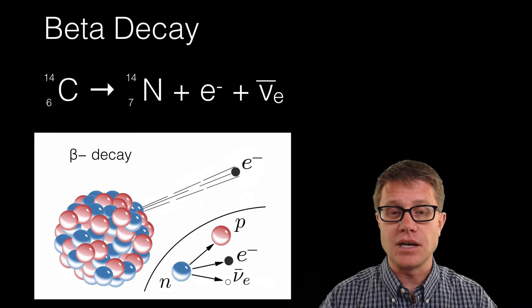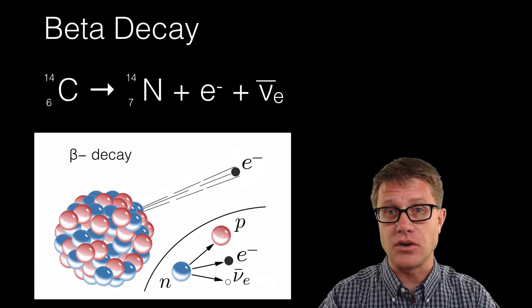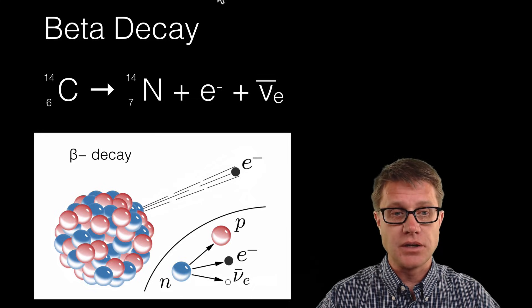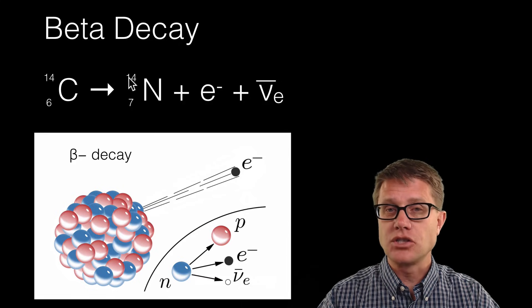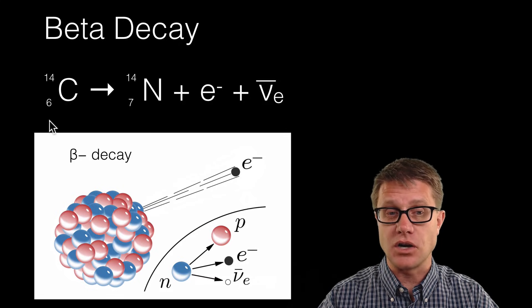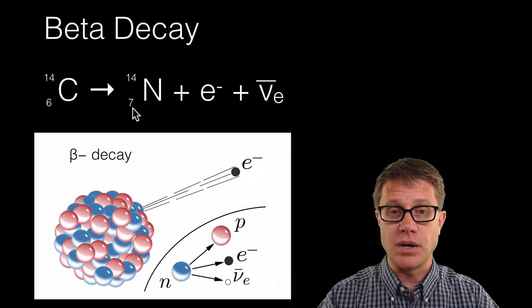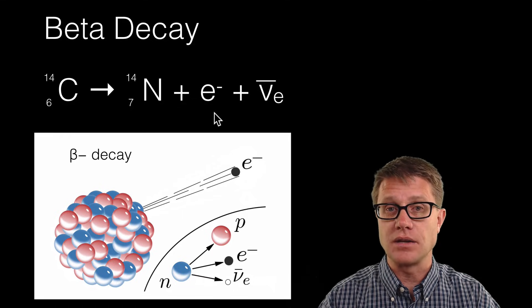Let's look at beta decay. In beta decay we convert a neutron to a proton. We also give off an electron and an electron anti-neutrino. If we look across the top, mass is conserved, 14 and 14. And charge is conserved. On the left side we have got 6 positive charges. On the right side, 7 positive, 1 negative, so we have got 6 positive charges on the right as well.